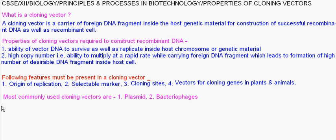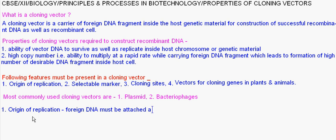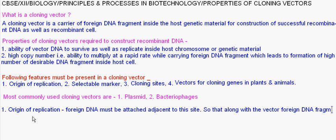Foreign DNA must be attached adjacent to the origin of replication site so that, along with the vector, the foreign DNA fragment can also replicate in the host cell. The type of origin of replication can control the copy number — that is, the amount of desirable DNA fragment reproduced or replicated.